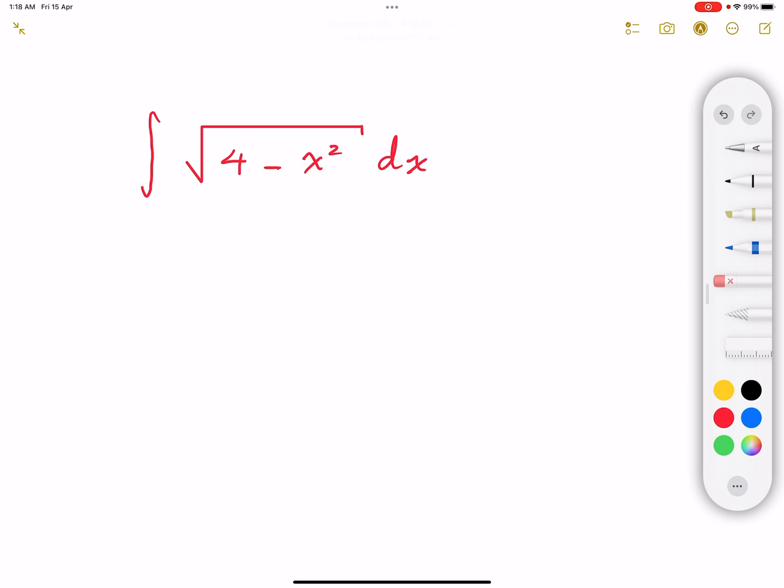And 1 minus sine squared under the square root, that's going to give us cosine squared under the square root. That's going to give us cosine, and the derivative is going to be, so that's basically the idea.